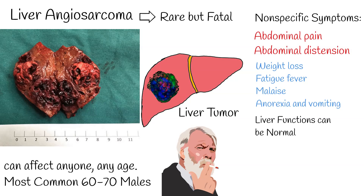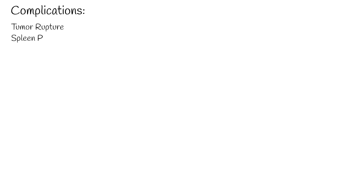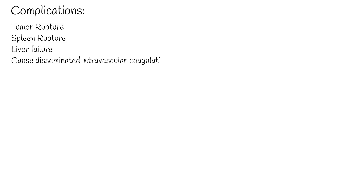Liver angiosarcoma has several important complications. The most fatal is tumor rupture and intra-abdominal bleeding, which can be fatal in many cases. It can also metastasize to the spleen and cause splenic rupture, result in liver failure, or cause disseminated intravascular coagulation (DIC).